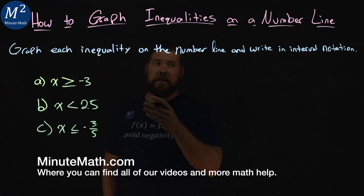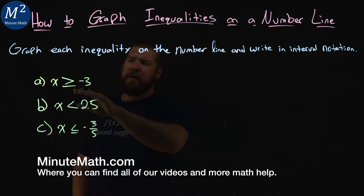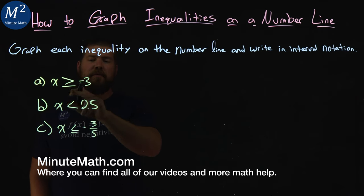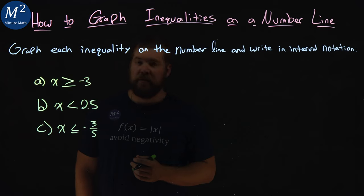We're given three problems here to help us understand this topic. Part A says we need to graph x is greater than or equal to negative three on a number line, and we want to write this in interval notation.